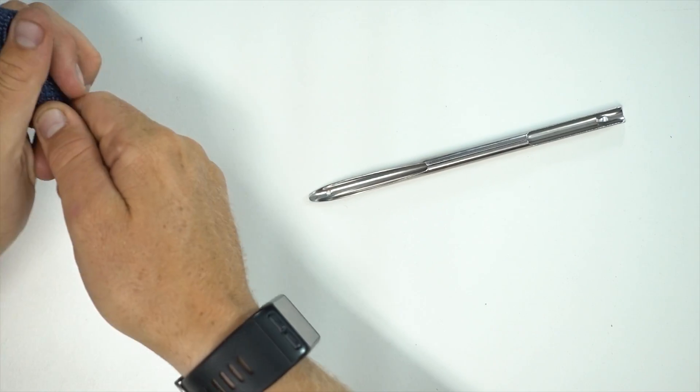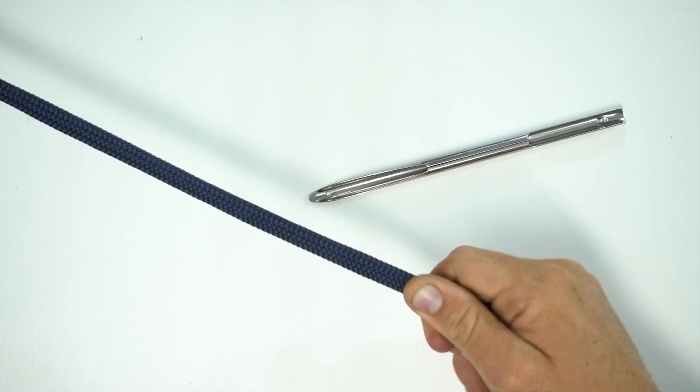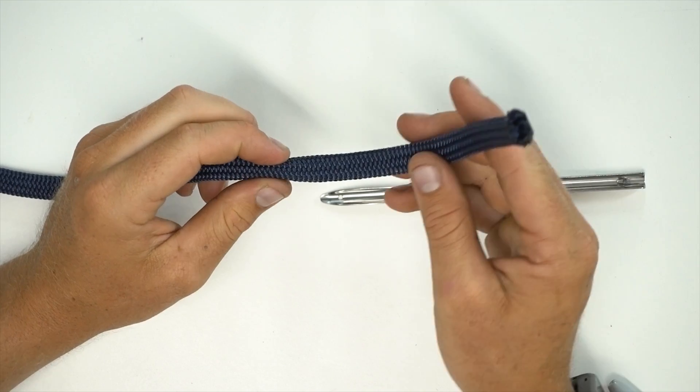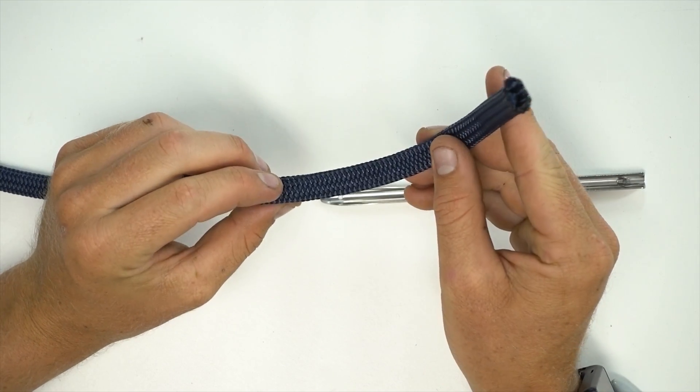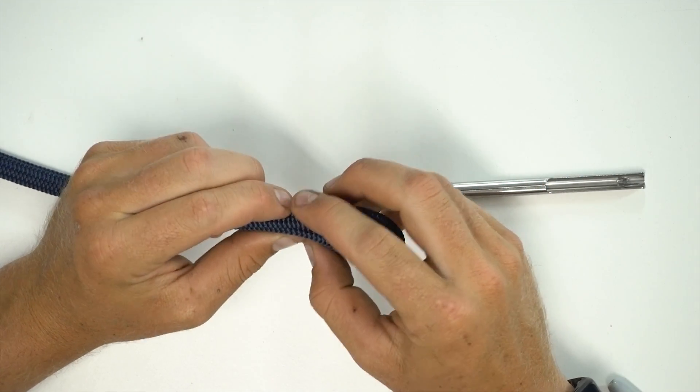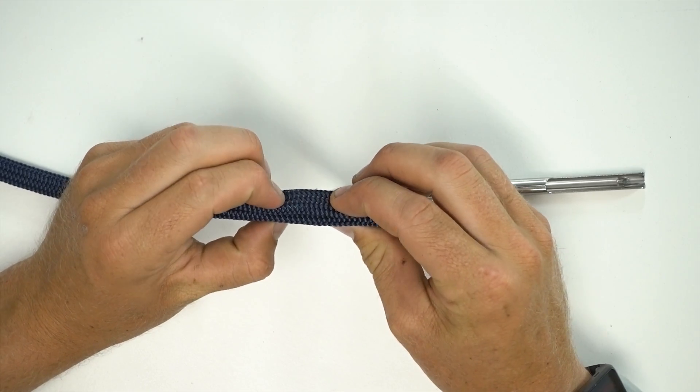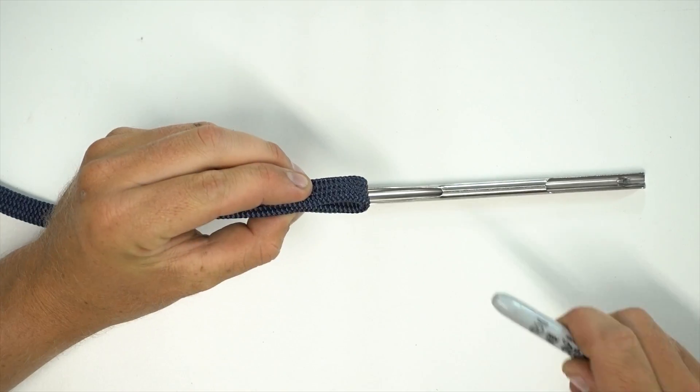Now we grab our knot and melt the cover back over the core. We are left with a little bit of just cover at the end of our rope. We fold over the cover so that the end of the cover lines up with the point in the rope where the core starts.